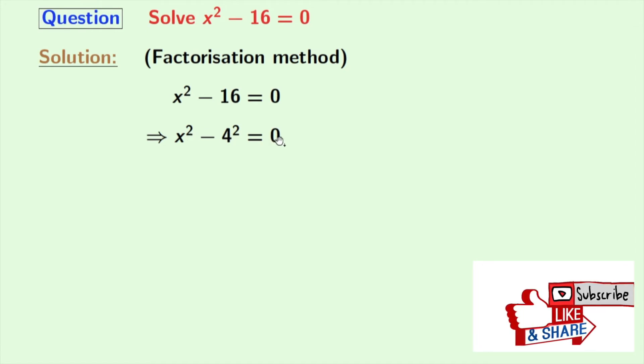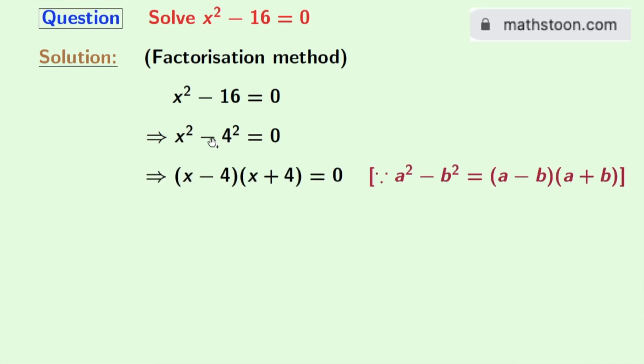Now factorizing the left hand side using the rule of a² - b² = (a - b)(a + b), we get (x - 4)(x + 4) = 0.